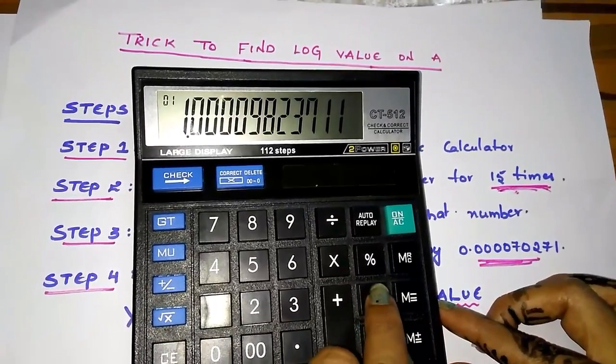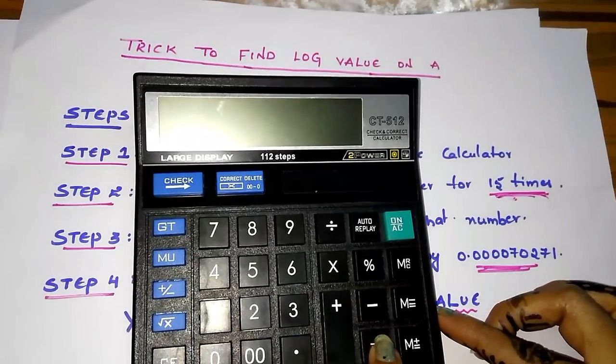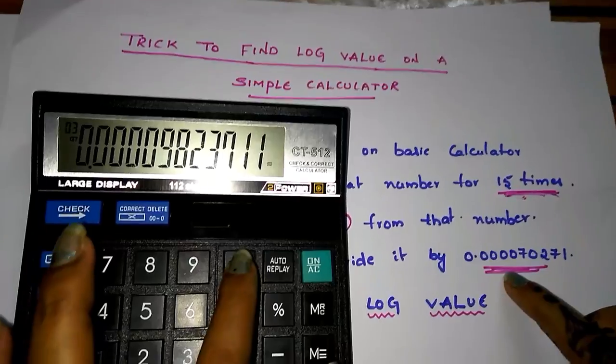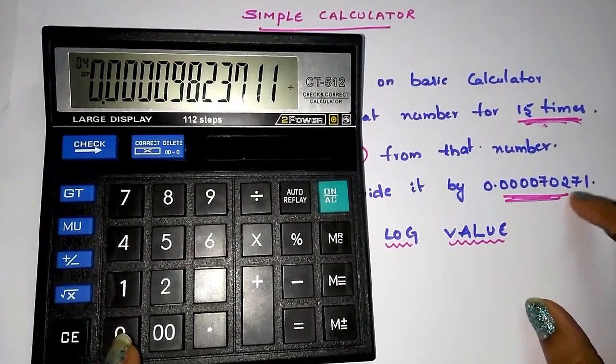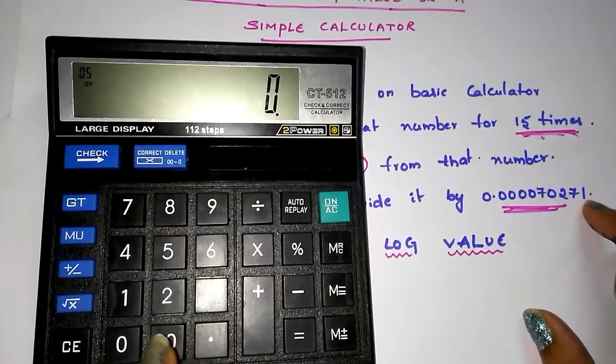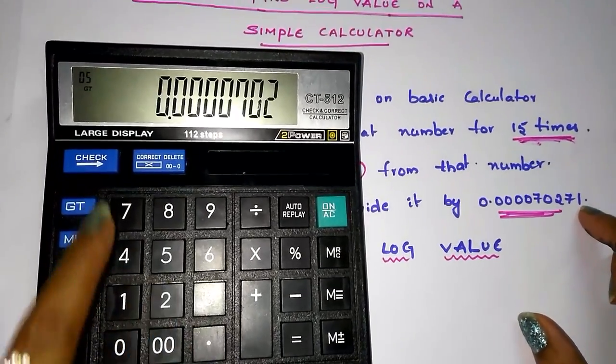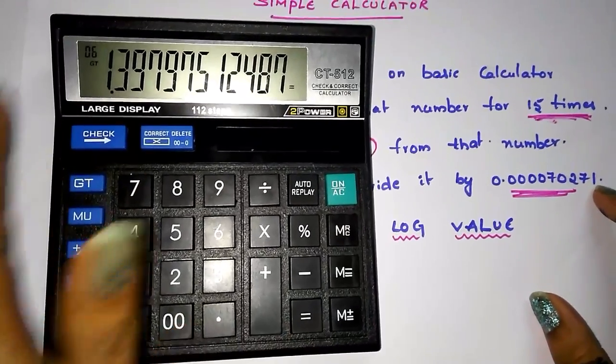Step number 3, subtract 1 from this number, minus 1. Then divide this number with this number: 0.000070271. That's it.